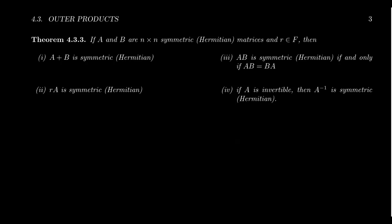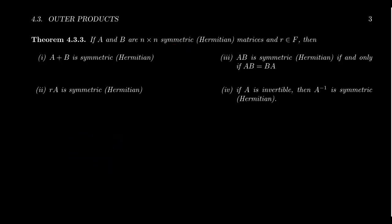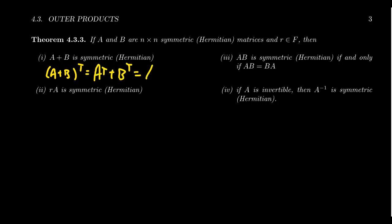Suppose we have two n by n symmetric matrices A and B and some scalar r in our field. Note that to be a symmetric matrix, you necessarily have to be square — if a matrix is m by n, its transpose is n by m, so for them to be equal we need n = m. If you add together two symmetric matrices, that's going to be a symmetric matrix, and this is also true for Hermitian matrices. Because (A + B) transpose equals A transpose plus B transpose, which, since both are symmetric, equals A + B. So A + B is symmetric.